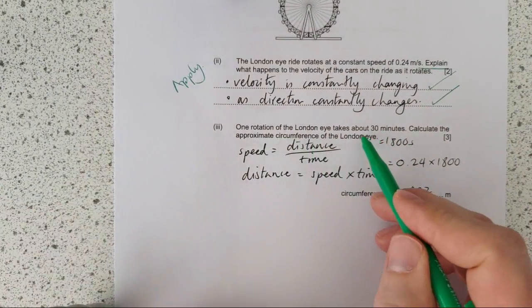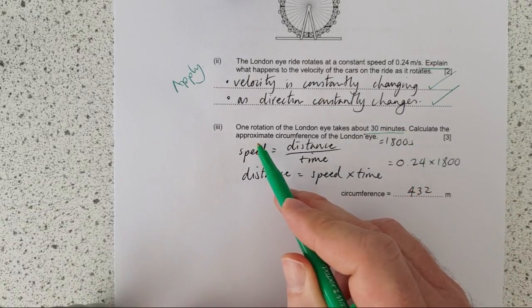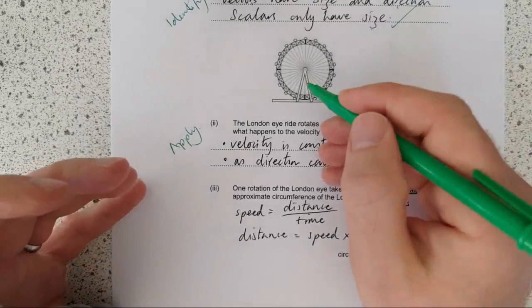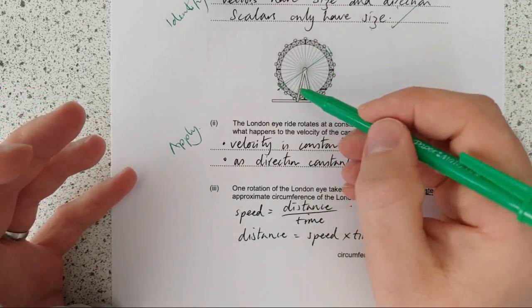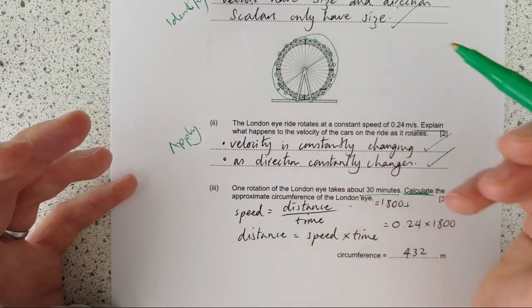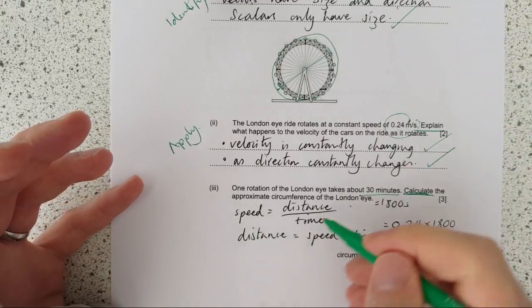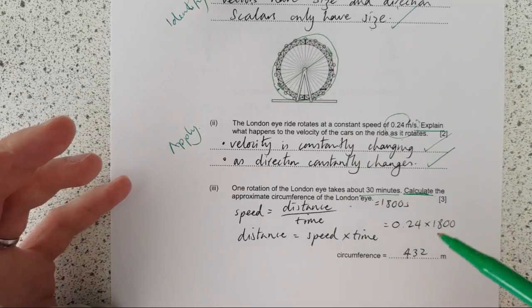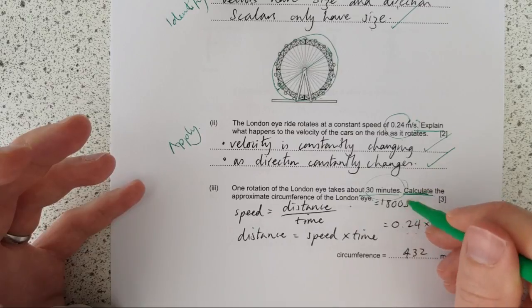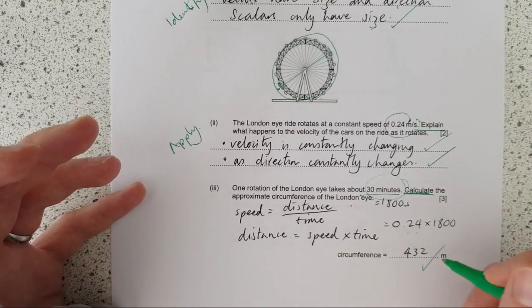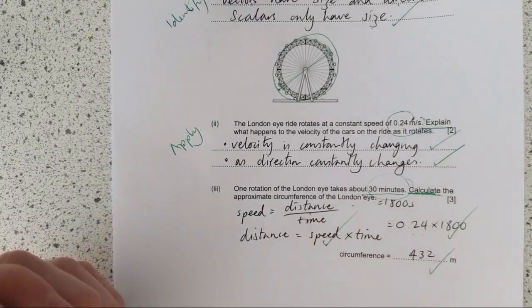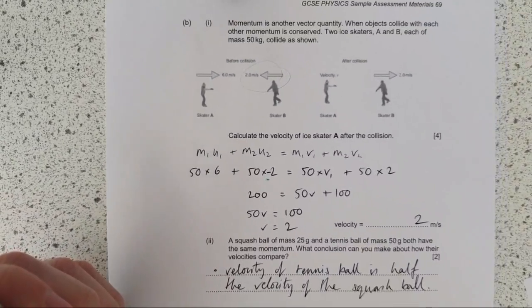One rotation of the London eye takes about 30 minutes. Calculate the approximate circumference of the London eye. A lot of people are going to think, do I need to do pi d or something? I don't have a diameter. So no, we don't need to do that. We need to remember it goes around once every 30 minutes. So the circumference is the distance traveled at the speed of 0.24. So really, this is just good old speed, distance, and time. Rearrange for distance is speed times time. Well, that's meters per second. So we've got time in minutes. So let's convert by doing 30 times 60 to give us 1,800. The circumference is 432 meters.